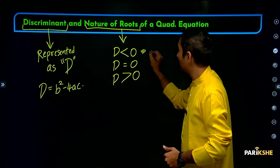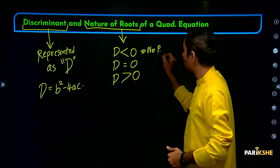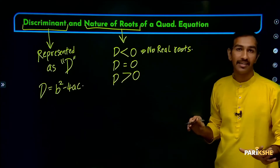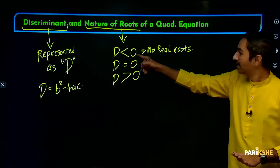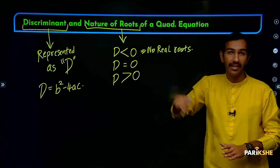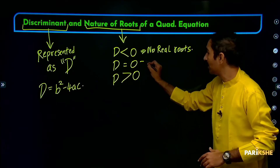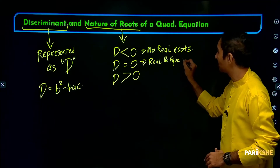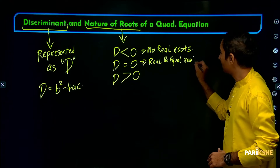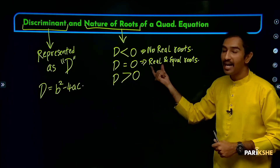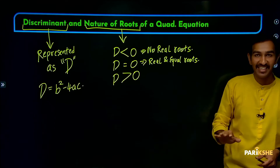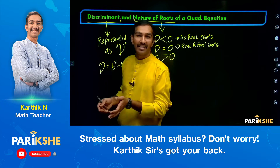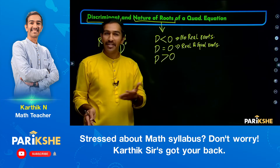If D is less than 0, there are no real roots. When D is equal to 0, we get real and equal roots. Real means real numbers — the set of rational and irrational numbers.